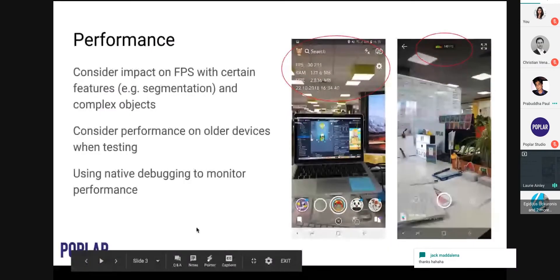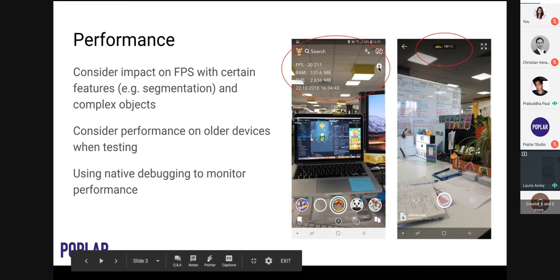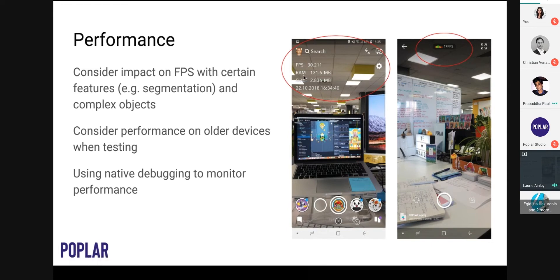On performance: with a lot of effects there's a lot going on and it's very intensive on a mobile processor. You should be using the native debugging tools within both Snapchat and Facebook. On Snapchat, when you send a lens to your device to test, you'll see a settings icon, and if you tap that you'll be able to see the frame rate and the amount of RAM being used for your effect. It's really important to bear in mind that older devices will not run the effect as well as your own device, unless you are testing on an older device.